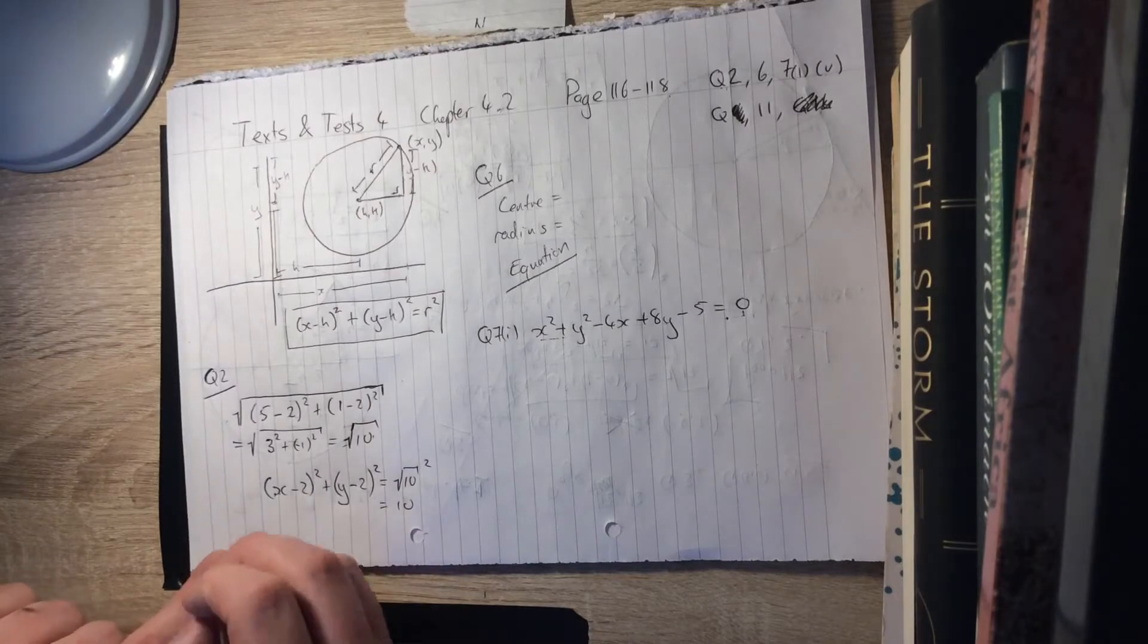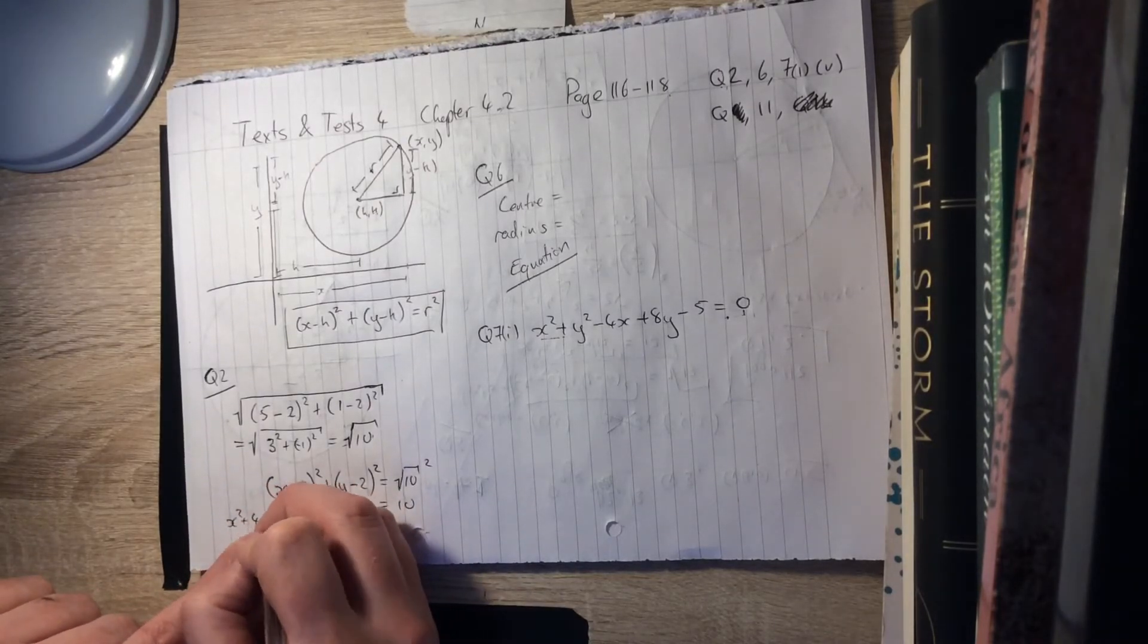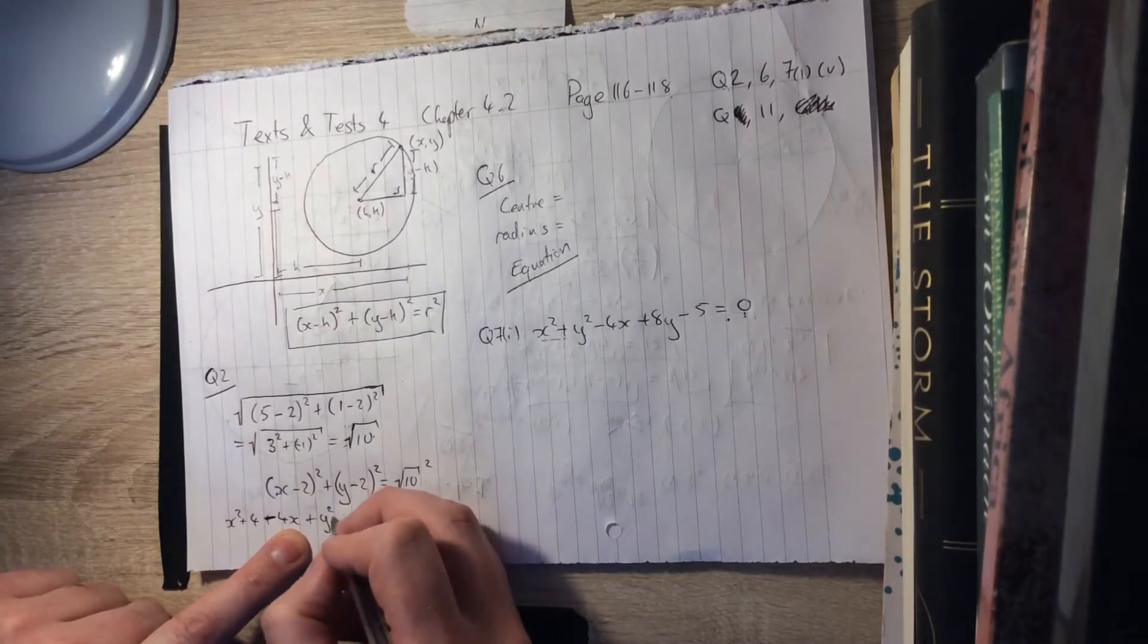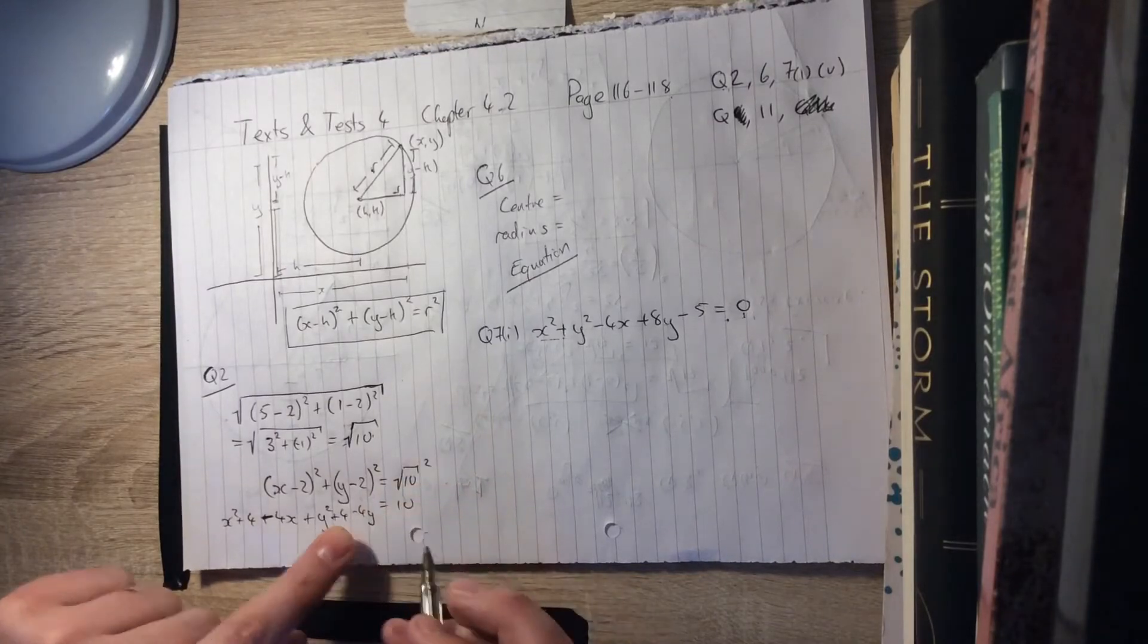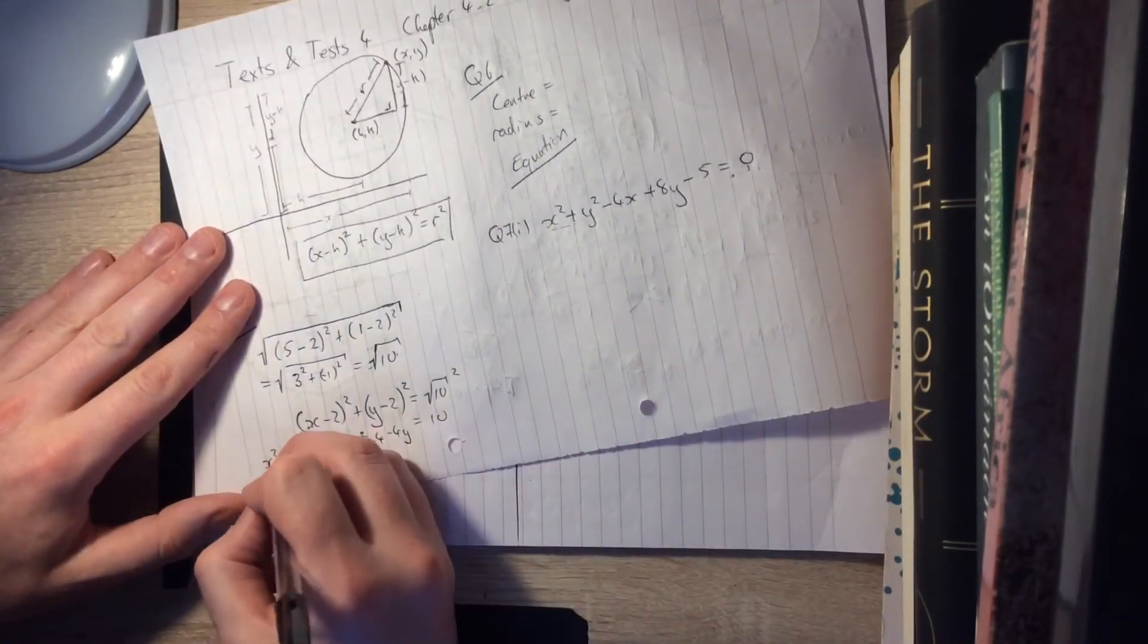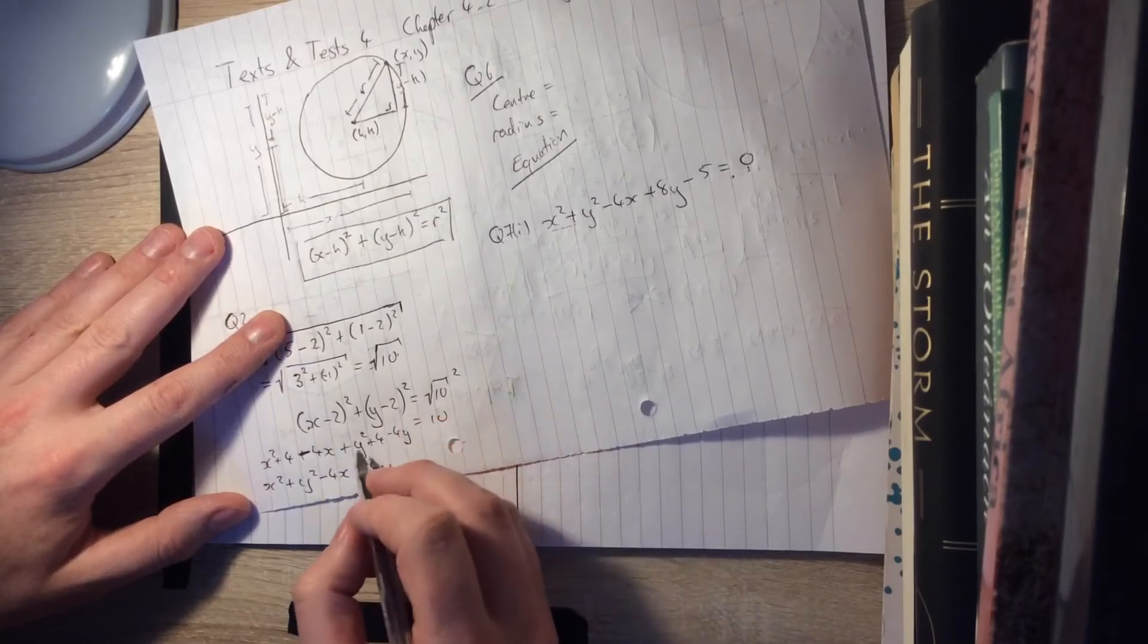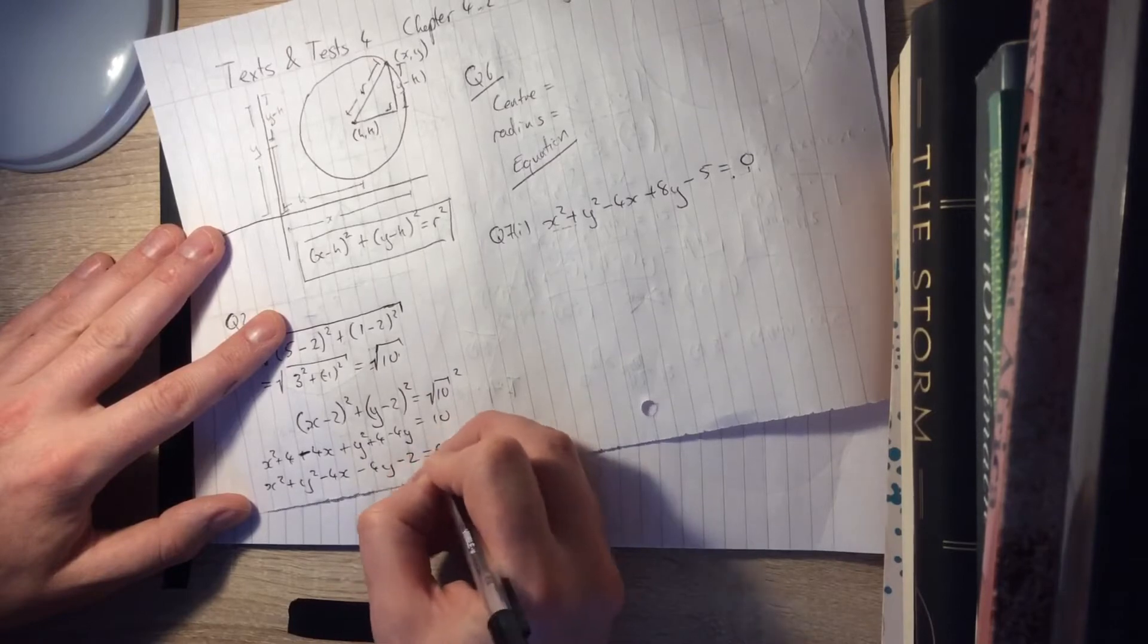If you want to multiply it out, you can. Squaring this, you're going to square the first, square the second twice the product. That's x squared plus 4, twice the product is minus 4x. Same thing here, square the first, y squared plus 4, twice the product is minus 4y. And you normally put it together then as x squared plus y squared minus 4x minus 4y. And then 4 and 4 is 8, move that over, you get take away 10, 8 take away 10 is minus 2 equals 0.